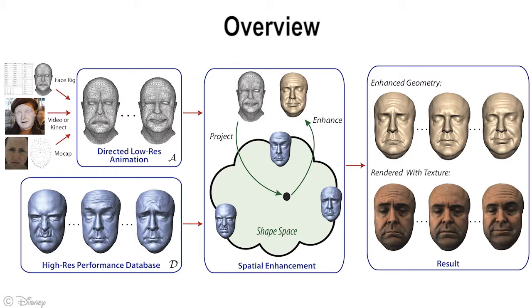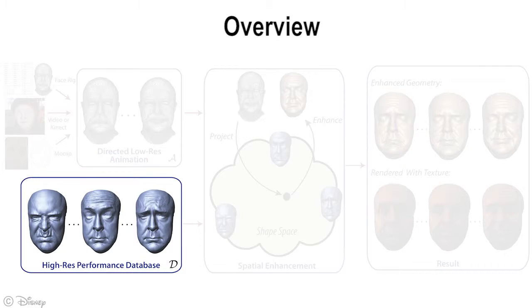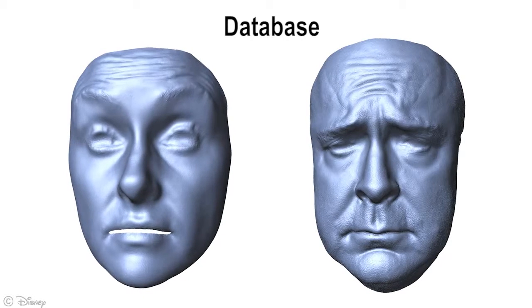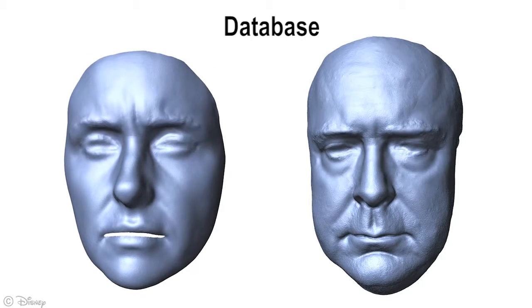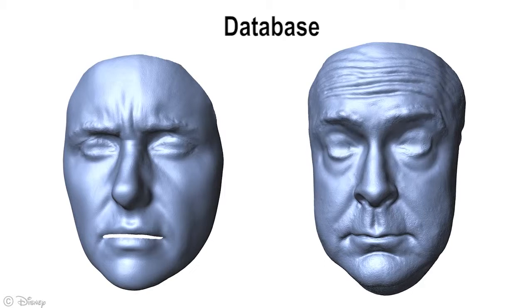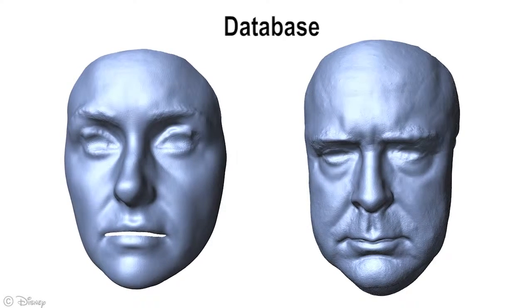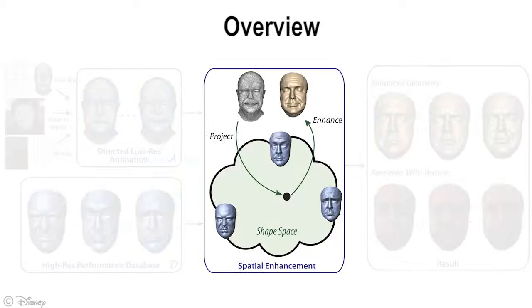Our input is the low-resolution facial animation and a high-resolution performance capture database of the target actor. Here we show a few database frames for two different actors. Note the fine details and wrinkles contained in the database. Our algorithm can enhance both the spatial details as well as the temporal dynamics of the performance by matching the input sequence to the database in shape space, and then transferring the missing details to the input animation.